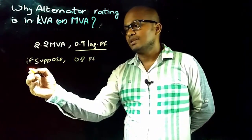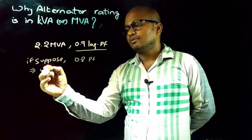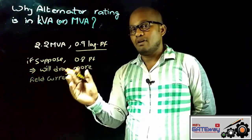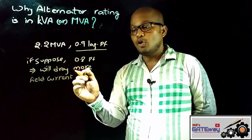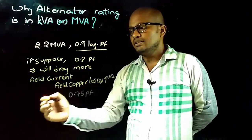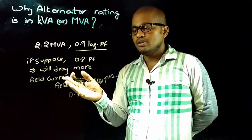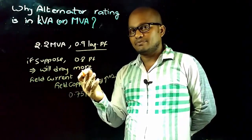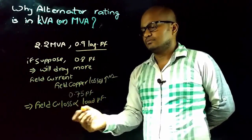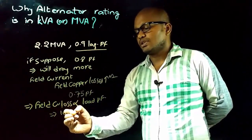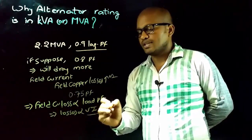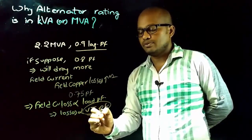If that particular alternator is operated at 0.8 power factor, it will draw more field current. If the alternator draws more field current, field copper losses will increase. If it is operated at 0.75 power factor, it will draw even more field current, resulting in more field copper losses and more heating. This means field copper losses are directly proportional to load power factor, implying losses are proportional to VI cos φ — representing real power in kilowatts.